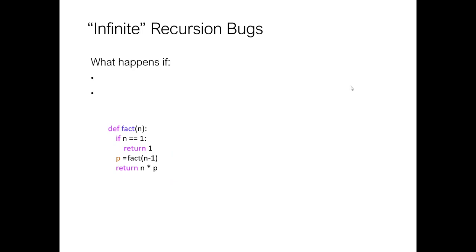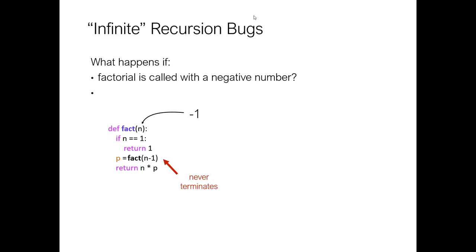Two things that go wrong with almost everybody's code when learning recursion. Number one: what happens if we call factorial with a negative number? If n equals 1 — it's not, skip down. Then we'll do a smaller number, negative 2. Then n with negative 2 is not equal to 1, subtract 1 again. It will never actually reach the point where it gets to 1 — we'll just keep subtracting: negative 1, negative 2, negative 3, negative 4. It will never reach 1, so we'll have an infinite loop version that never terminates.